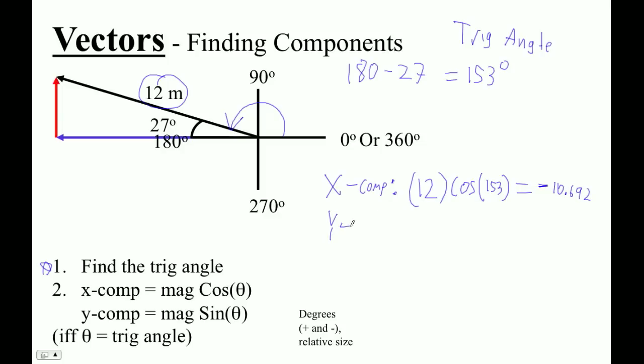The y component is just simply 12 times sine 153. So if I go 12 sine 153, I get 5.448 positive. And these are meters, so these units here will be meters.